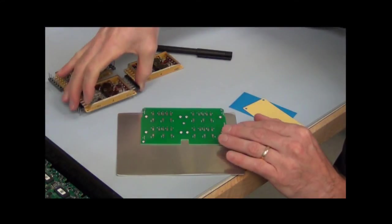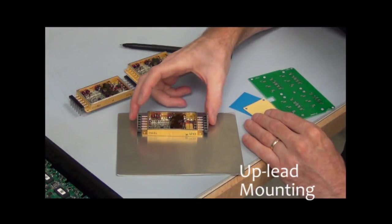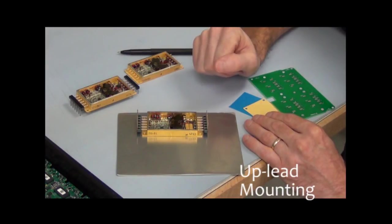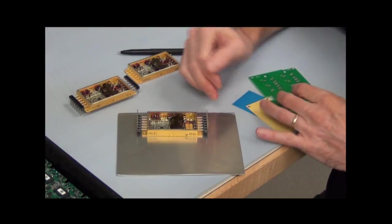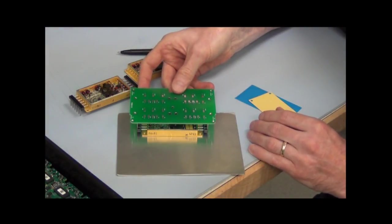We also offer an up leaded option. This might be used where the part is mounted to a heat sink but the printed circuit board is on the opposite side.